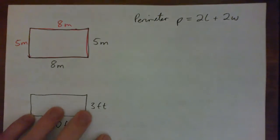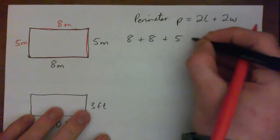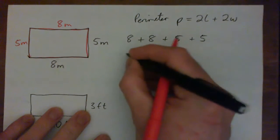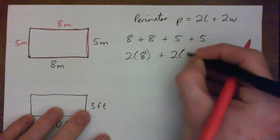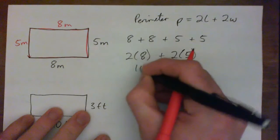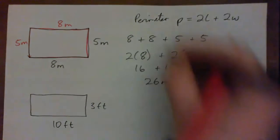So the perimeter is actually 8 plus 8 plus 5 plus 5. Or in other words, 2 times 8, which is 2 times the length, plus 2 times 5. So 16 plus 10 equals 26 meters. That's the perimeter.